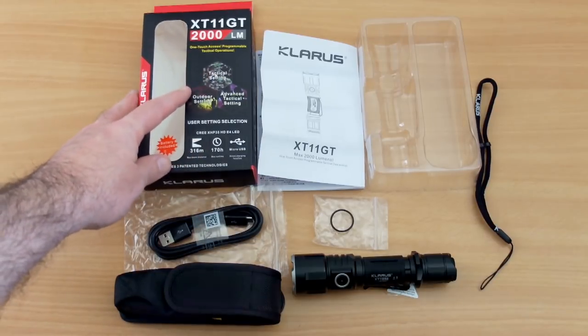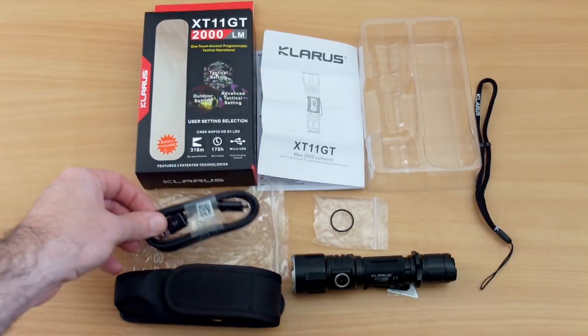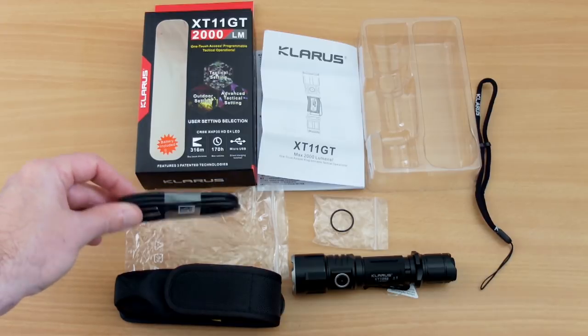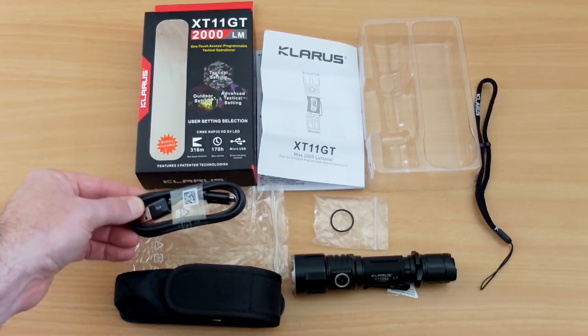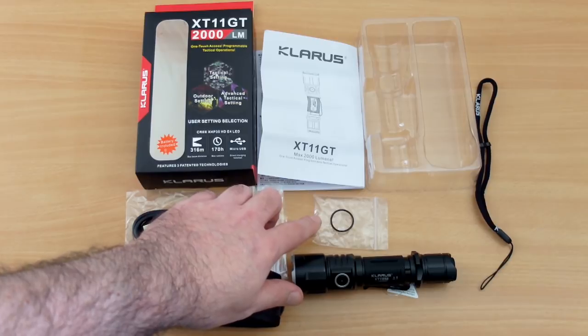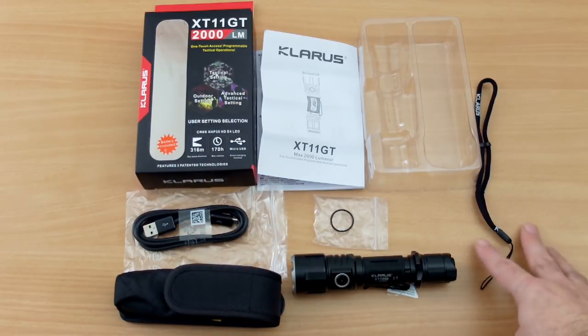I have a new flashlight in for testing today, it's the XT11 GT. This is just to show you what you get included in this particular kit: a micro USB charging cable, spare o-ring seal, hand strap is included.